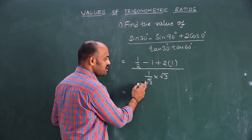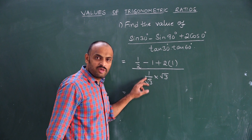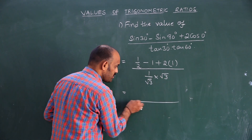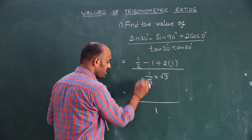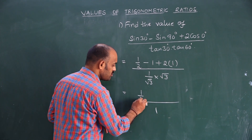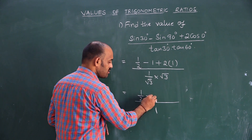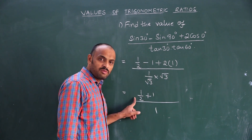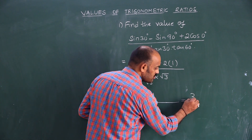Since these two are multiplication — 1 by root 3 times root 3 — that equals 1. So the denominator is 1. In the numerator: 1 by 2 minus 1 gives... 2 minus 1 is 1, and 1 plus 1 by 2 equals 3 by 2.